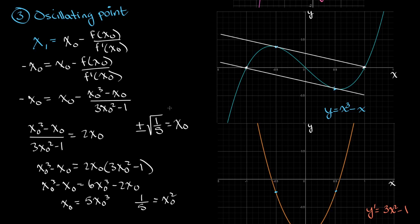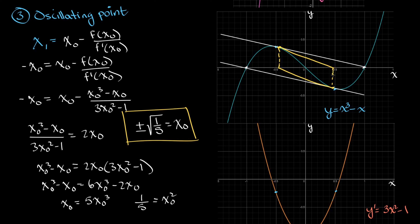So x₀ = ±√(1/5) are the oscillating points. If we take our initial guess to be positive or negative √(1/5), Newton's method will just bounce back and forth between them, making no progress. Graphically, √(1/5) is a little less than 1/2, and the tangent lines at these two points form a parallelogram-looking shape. You apply Newton's method and it just keeps going back and forth — that's why we call it an oscillating point. This only applies to functions of this type, which is all we'll ask you to handle.